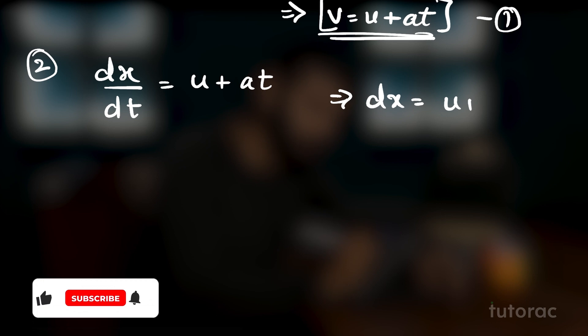Now let's move on to the second equation. Since we know velocity in terms of time, and we know how to relate velocity with displacement, we substitute velocity as dx by dt into the first equation. So we get dx by dt equals u plus at, and taking dt to the other side, we get dx equals (u plus at)·dt.